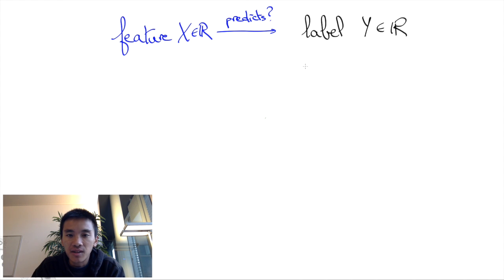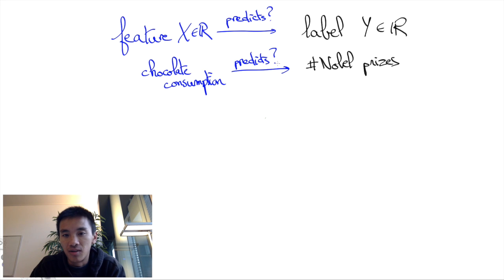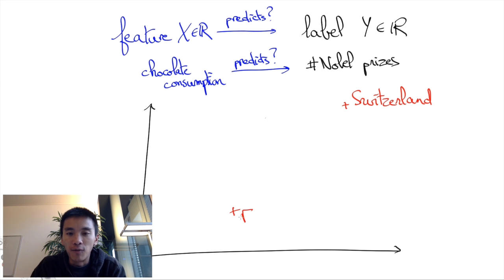To fix ideas, Y could be the number of Nobel prizes per capita of a country and X could be the quantity of chocolate per capita that the country consumes. If we draw a graph, then each datum for each given country will be a dot in this graph with the X-axis and the Y-axis.